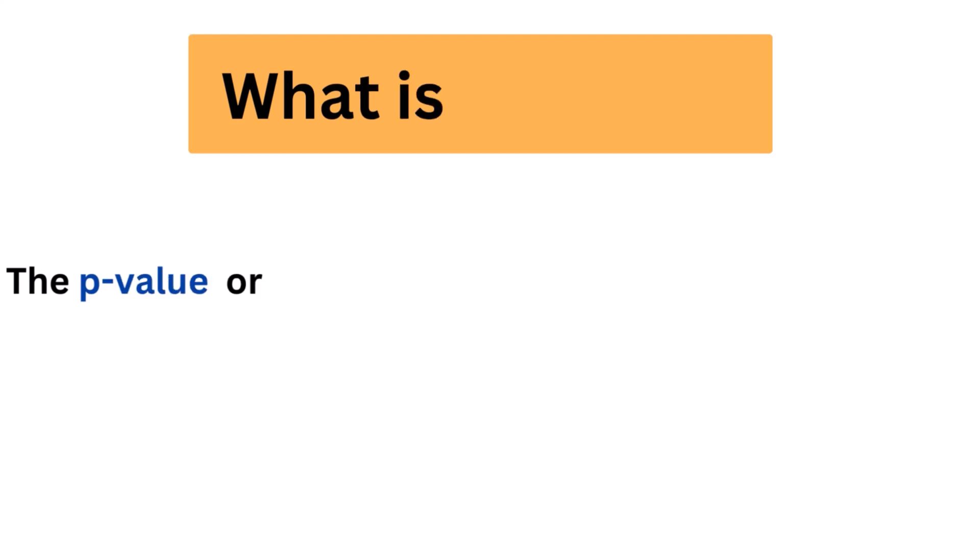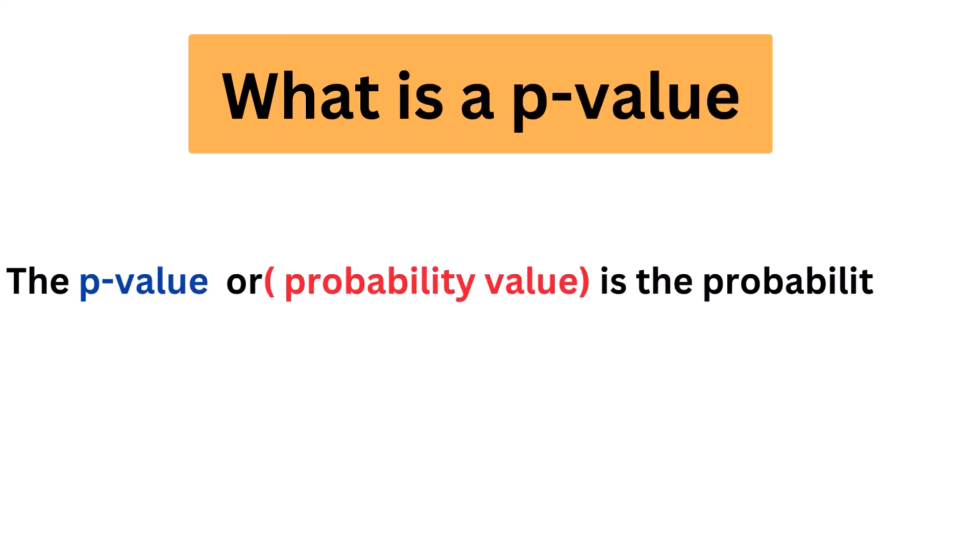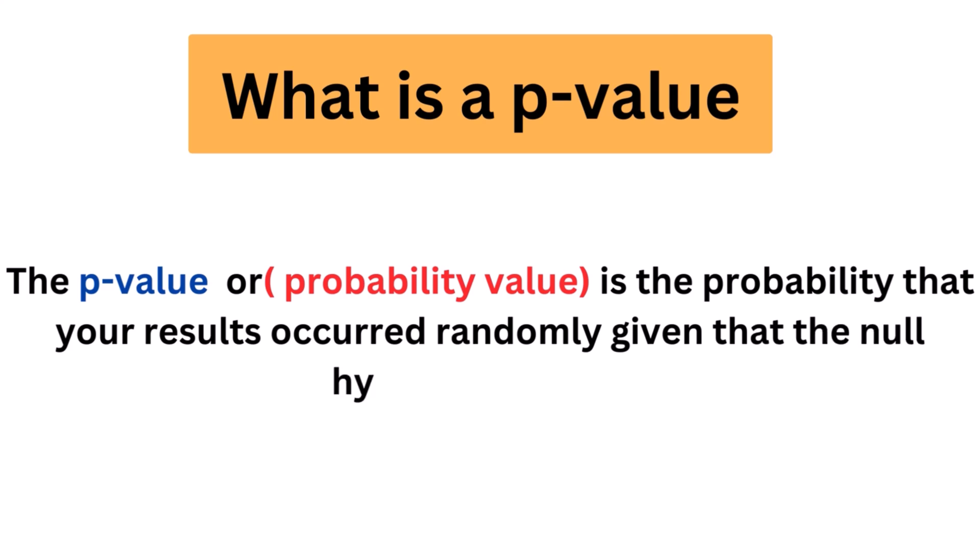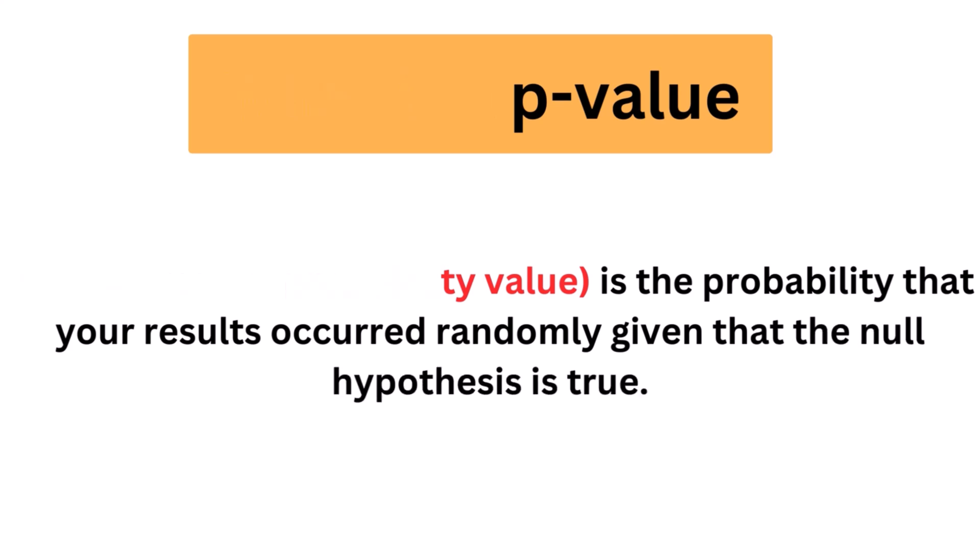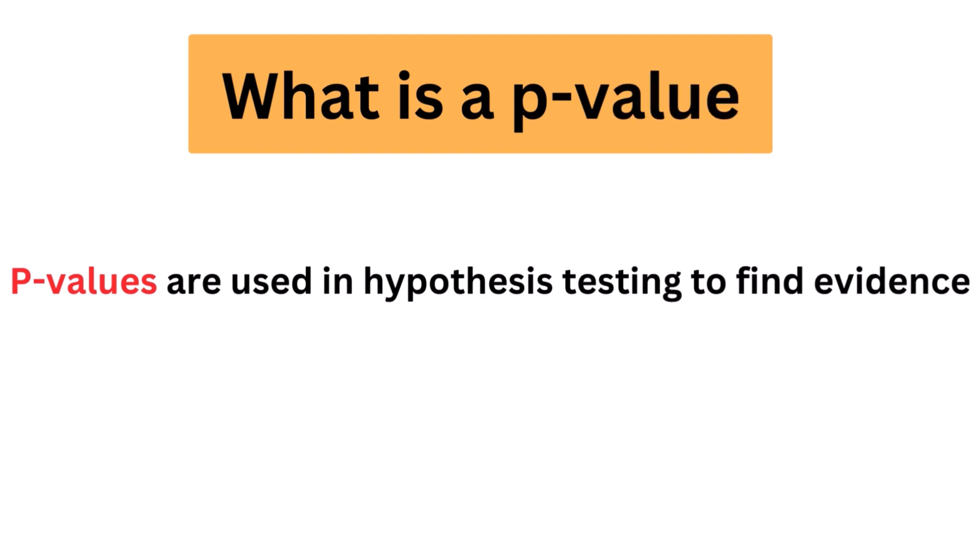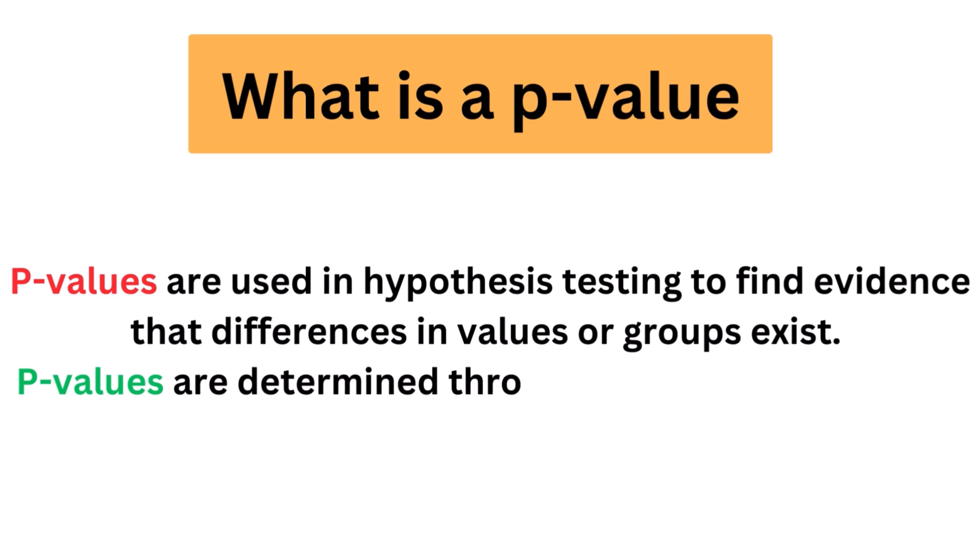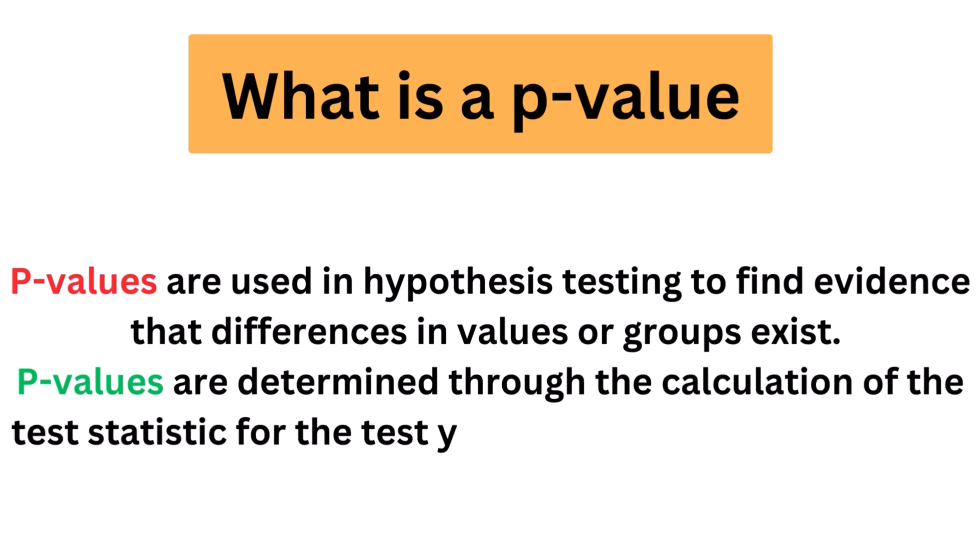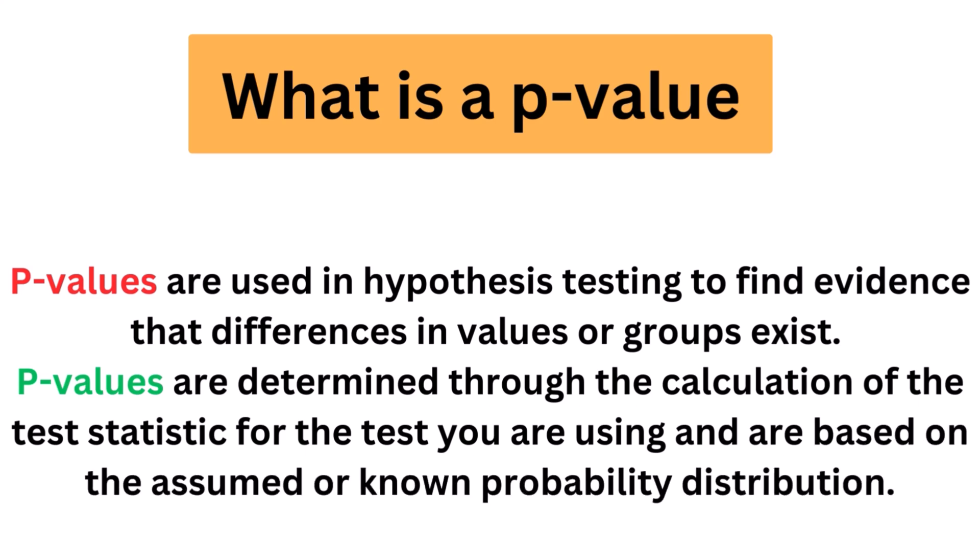The p-value, or probability value, is the probability that your results occurred randomly given that the null hypothesis is true. P-values are used in hypothesis testing to find evidence that differences in values or groups exist. P-values are determined through the calculation of the test statistic for the test you are using and are based on the assumed or known probability distribution.